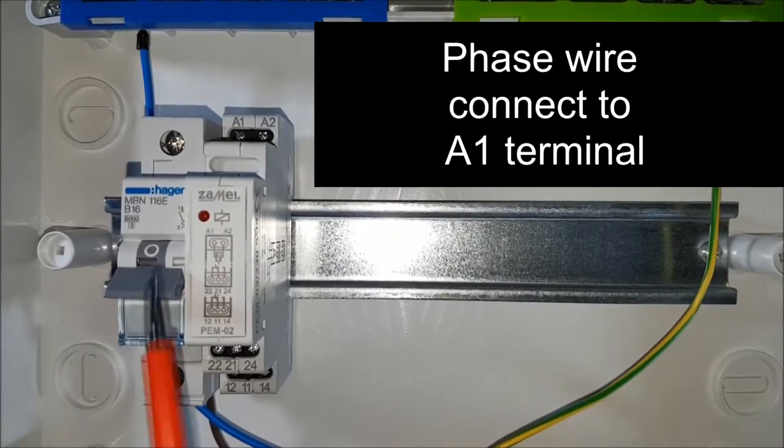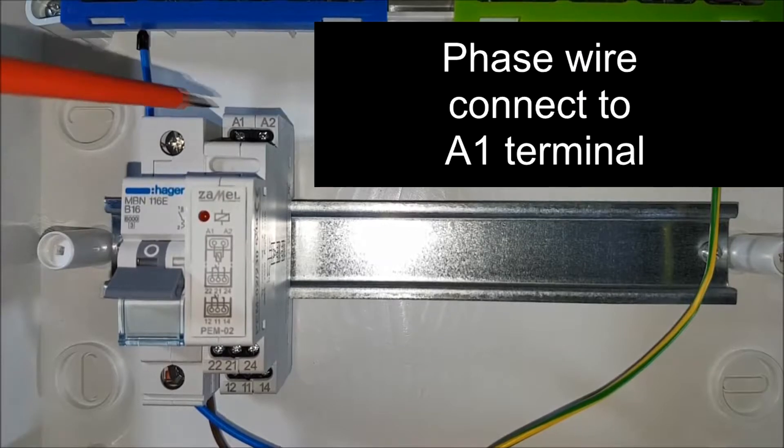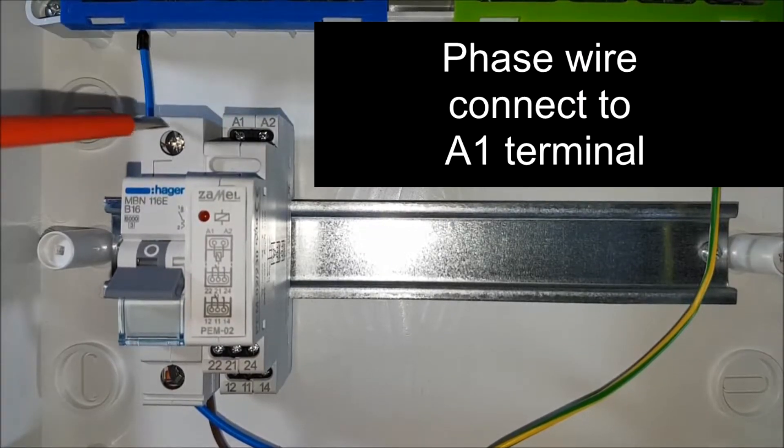In order to demonstrate the principle of relay operation, connect the phase signal to A1 input of the relay. The same phase potential goes to the outputs of the first and second channel of the relay.